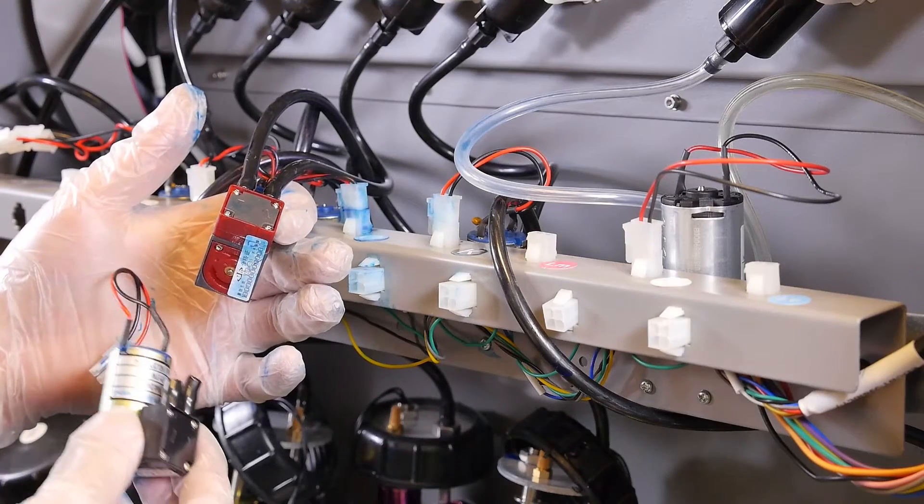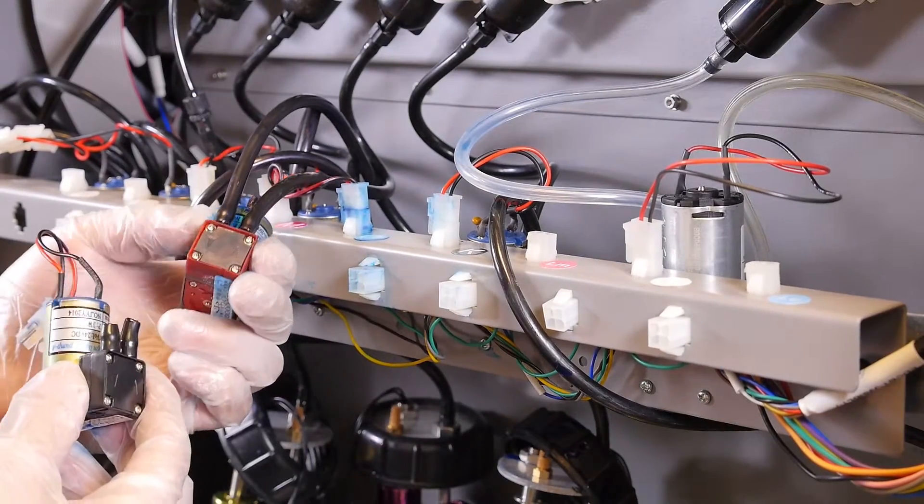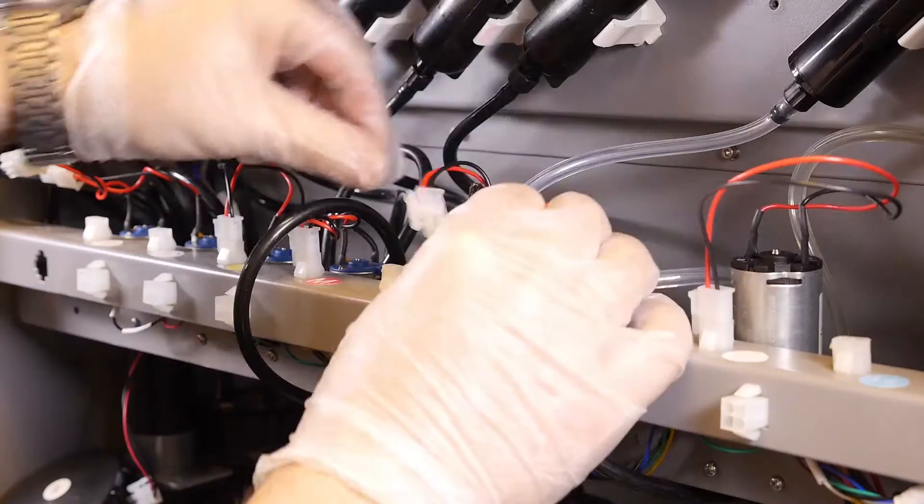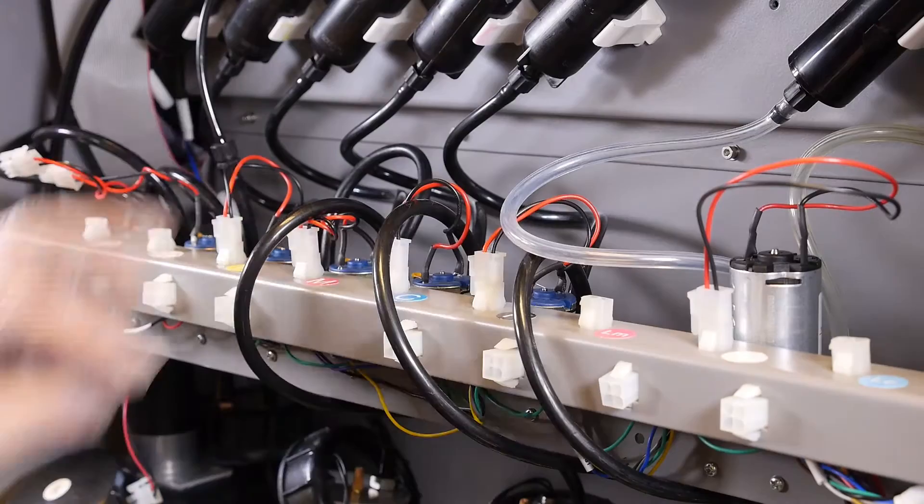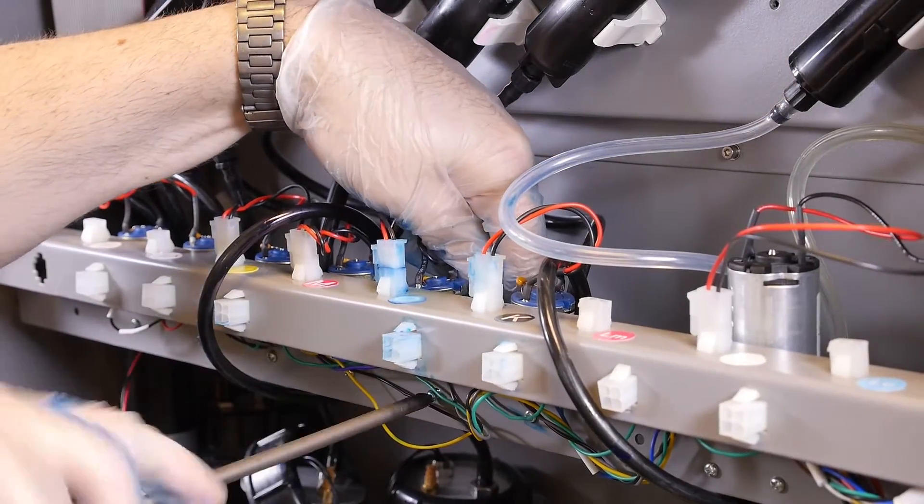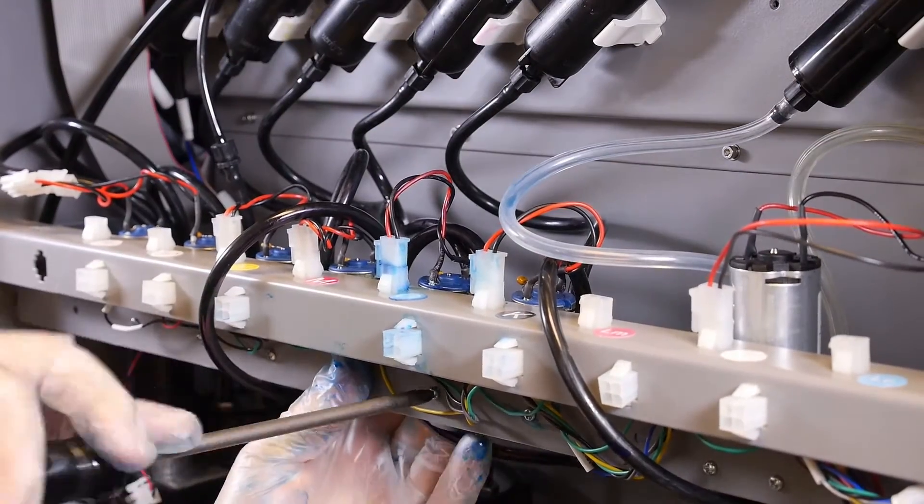Once you have completed both sides of the ink tubing, you are ready to mount the new pump. Plug the pump in at the same location we removed the pump from originally. Using your Phillips head screwdriver, tighten the mounting screws onto the mounting bracket.